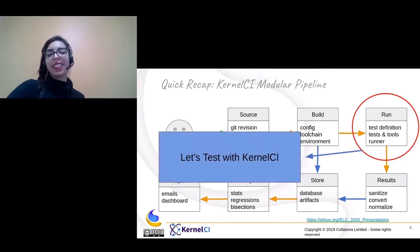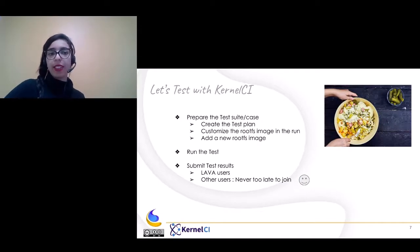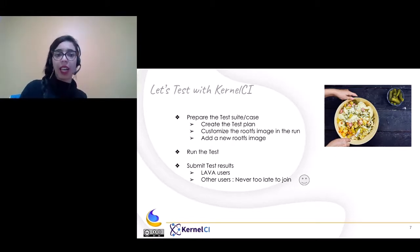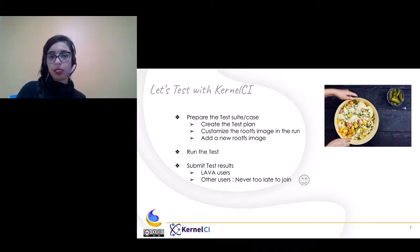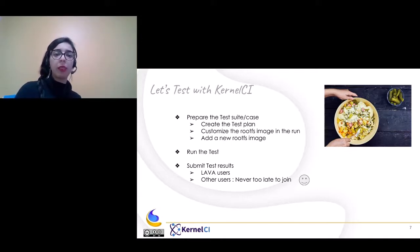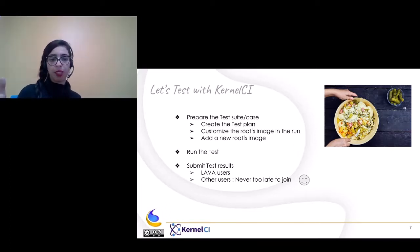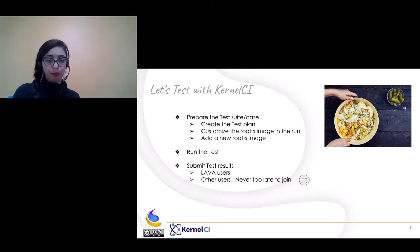Let's test with Kernel CI. We have three major points. The first one is how to prepare the test suite or case, including creating the test plan, customizing the rootfs image in the run, or even adding a new rootfs image. After creating our test suite or case, we will run the test and then submit test results. For submitting test results, we have two different types: one for LAVA users and one for non-LAVA users. It's never too late to join the project and you are welcome at any time.